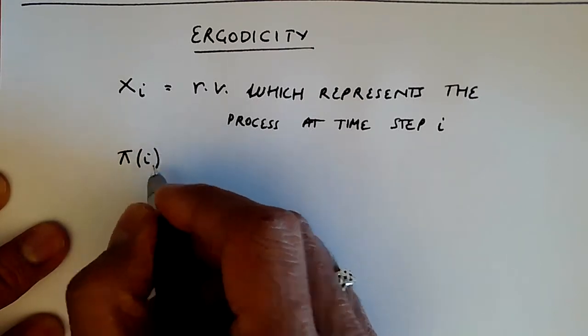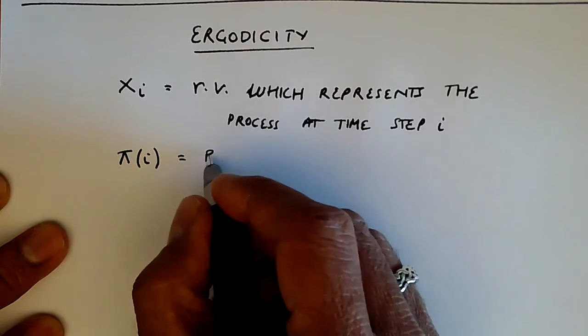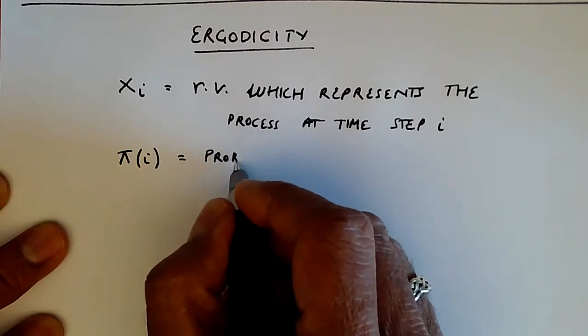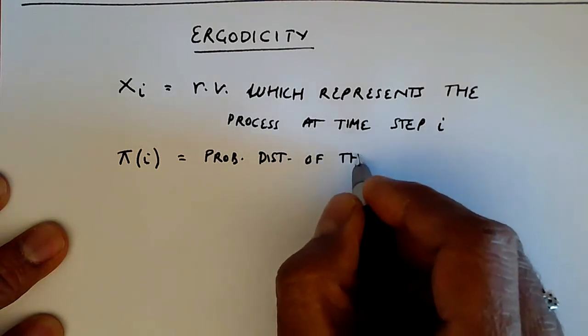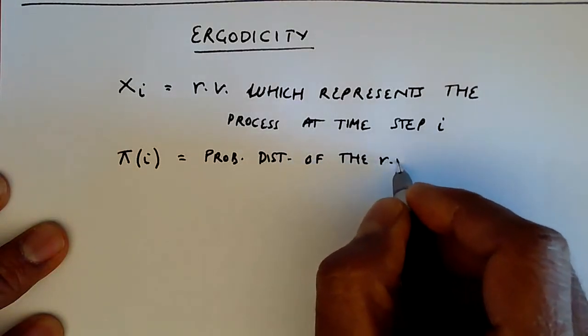So we denote that as pi i, which is the probability distribution of the random variable xi.